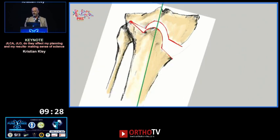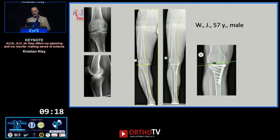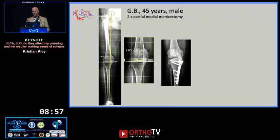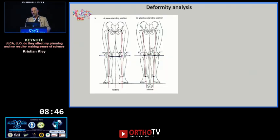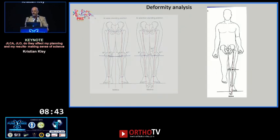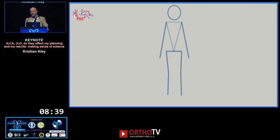This is when we started performing proper analysis of our alignments. If you have joint line obliquity and just look at the Mikulic line and correct the tibia, you may overdo it completely — ending up with an MPTA of 100 degrees. We created patients like this: one early case with an MLDFA of 101 degrees and MPTA of 88, where the malalignment was not in the tibia at all. These patients deteriorate quickly and require early conversion — which are tricky surgeries because you've changed the anatomy. Deformity analysis is absolutely key.